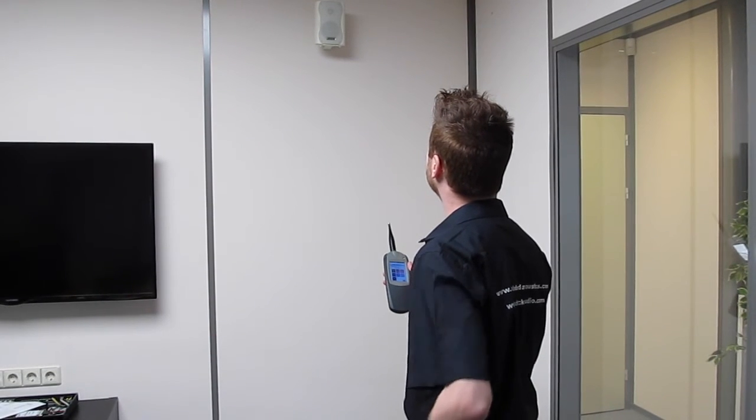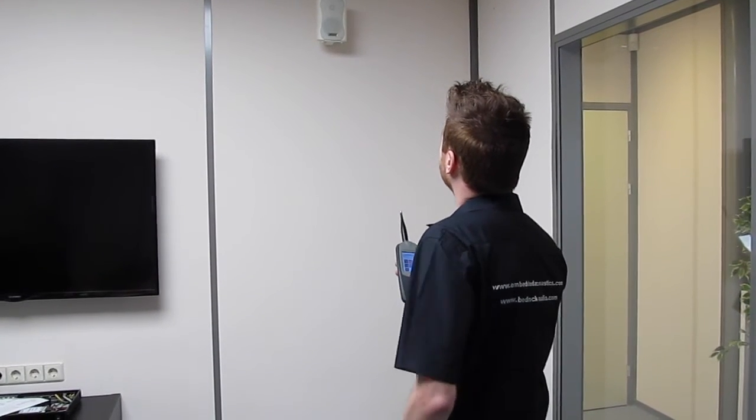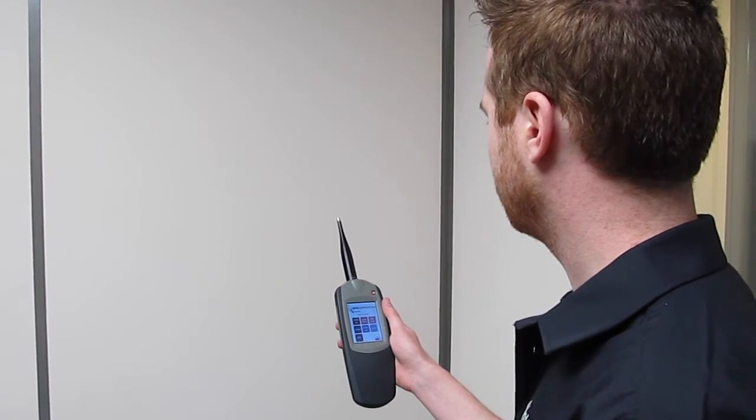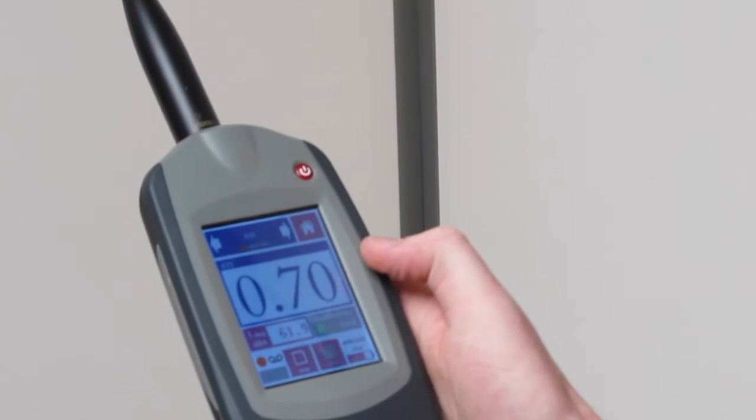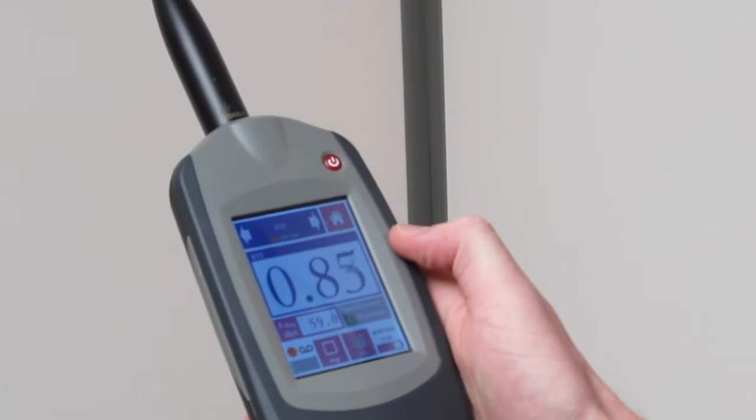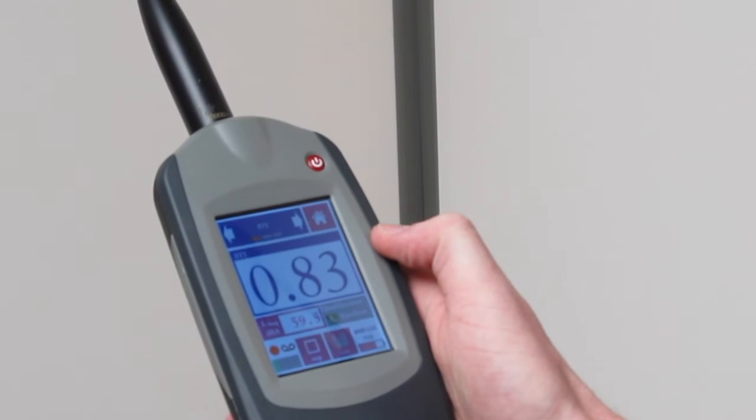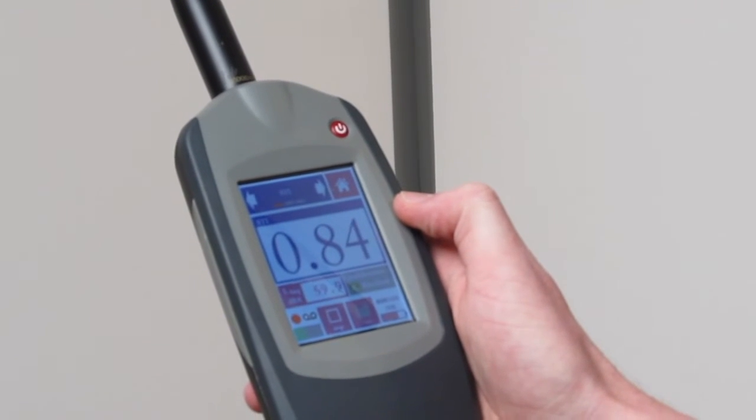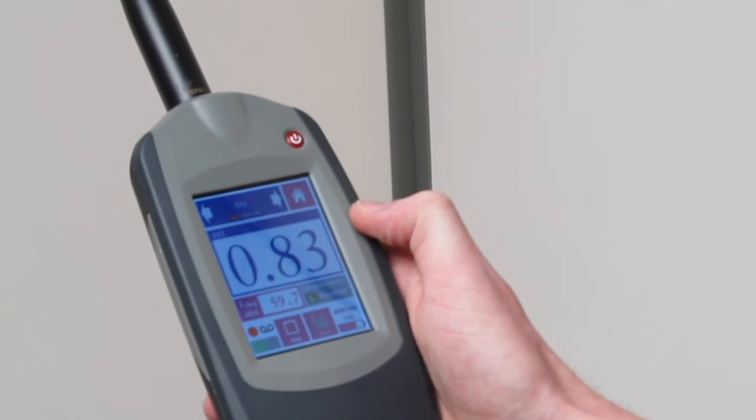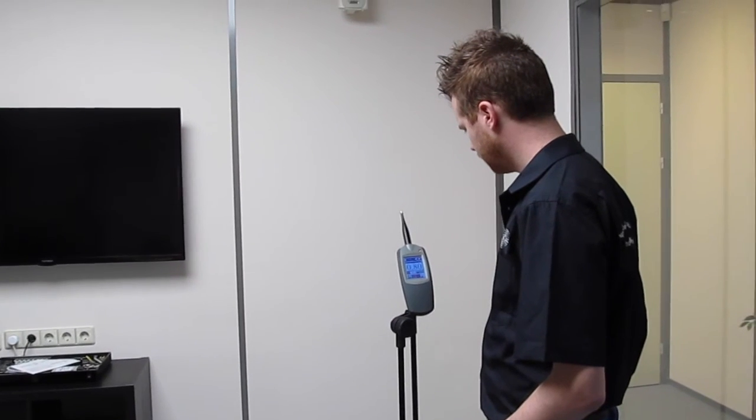The act of performing the STIPER measurement itself couldn't be simpler. Place the analyzer in a position where you would normally expect a listener to be. You may hold the instrument in your hand, but the most accurate results are obtained when placing the STIPER analyzer on a tripod. Now, press start. Each measurement takes about 20 seconds to complete.